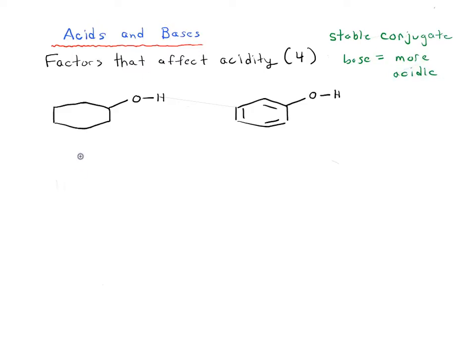Let's look at what the conjugate base of each of these species would look like. If we take this alcohol and remove a proton, we get O with lone pairs and negative charge. If we remove a proton from the species on the right, we get O with lone pairs, negative charge, and three alkenes here. Which of these two conjugate bases would be more stable?